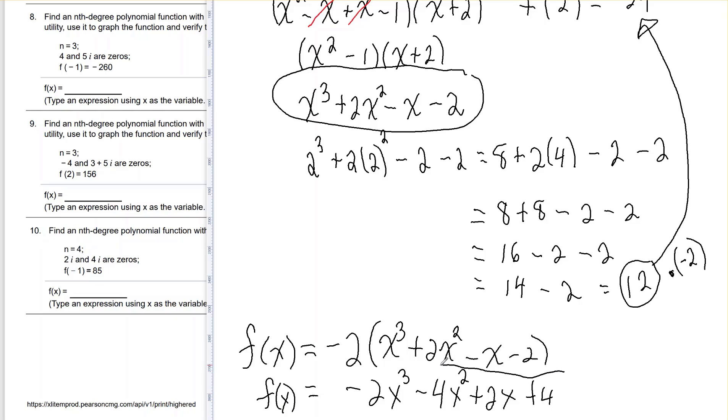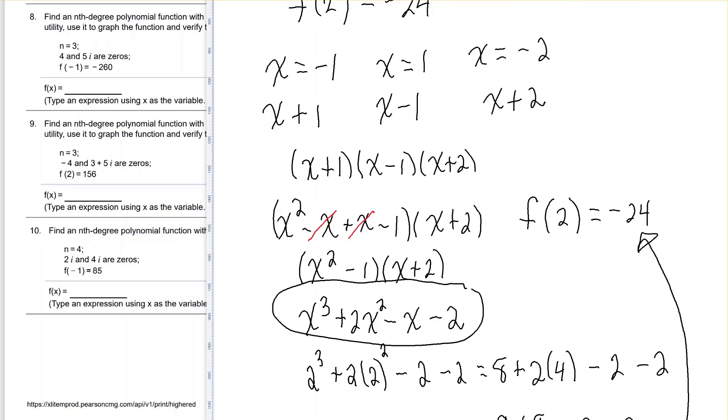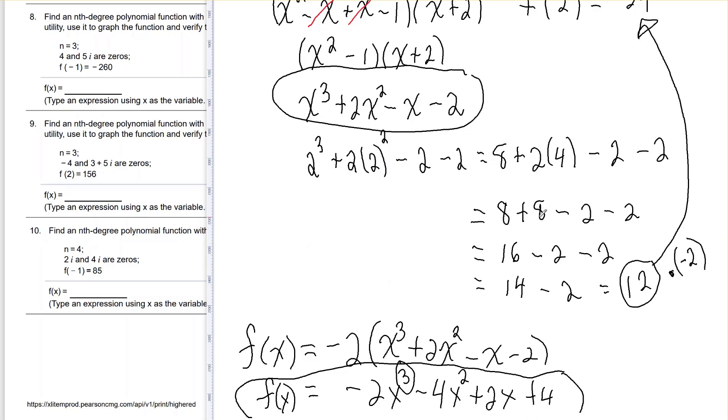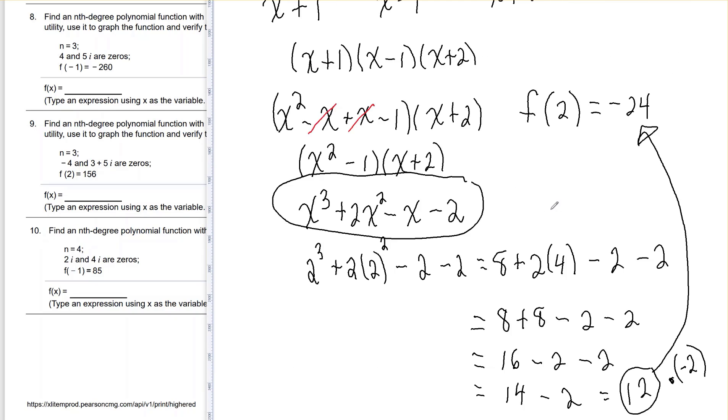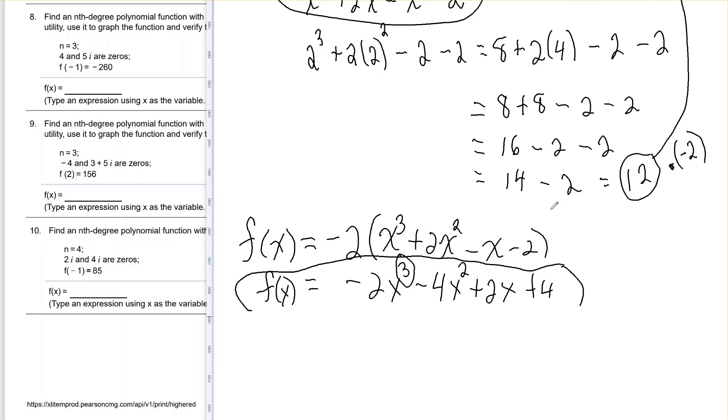Now if you were to solve this, you know it would have up to three roots. Those three roots would come out to be the three that we were given here. And if you plug in 2 into this function, you would get negative 24. So that's our final function.